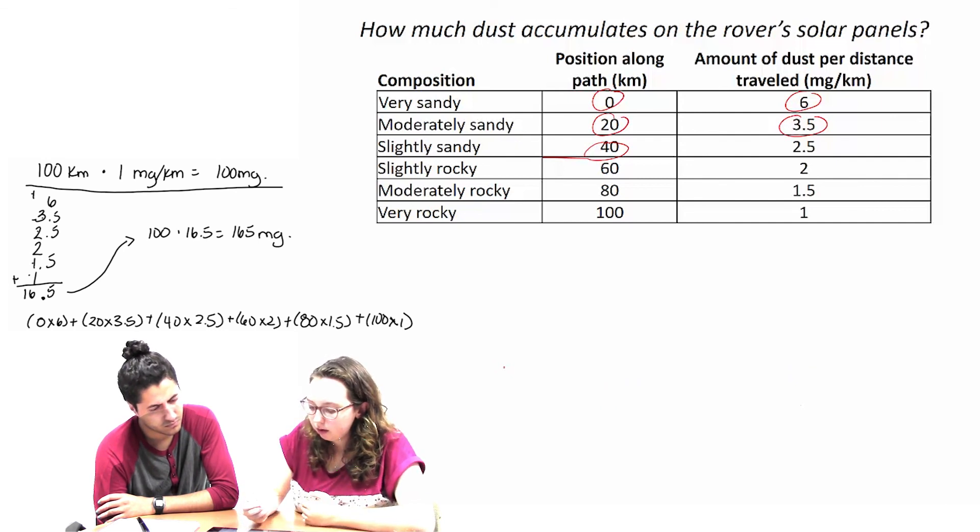In this video, Julian and Alyssa knew that they had to account for the different rates of dust accumulation, but they weren't satisfied with the methods they tried. We'll explore how to think about accumulation in upcoming videos.